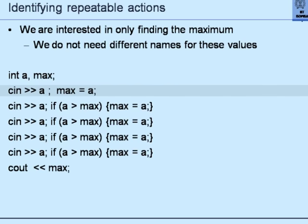So I further modify the program. Now the first instruction says: cin >> A, max = A. Subsequently: cin >> A, if A > max then max = A. Again: cin >> A, if A > max then max = A. Does this make sense? Will it work?